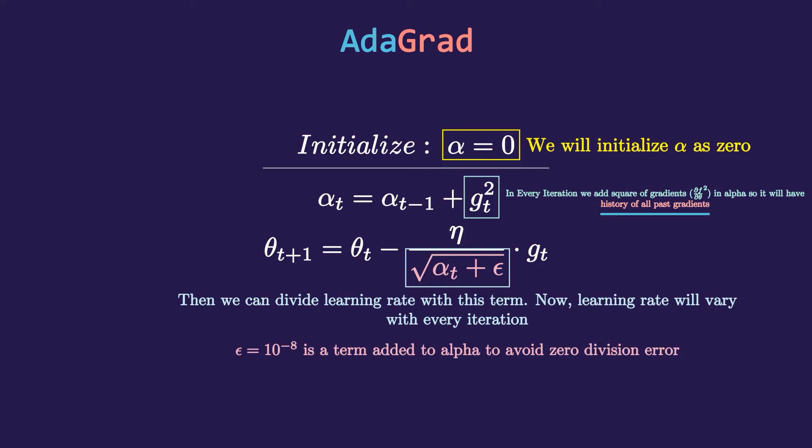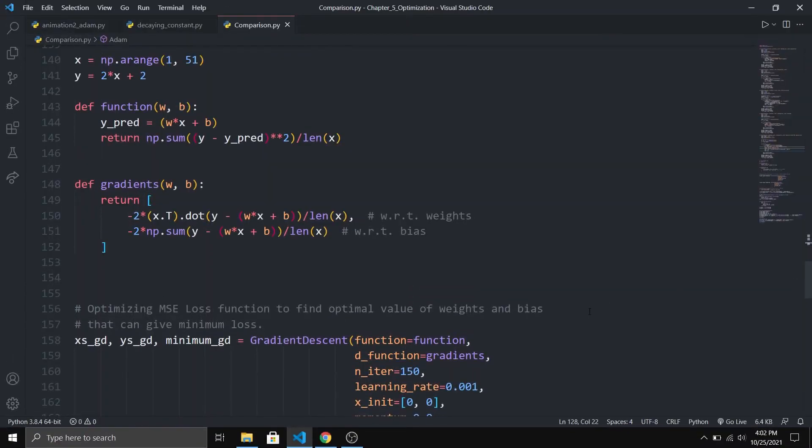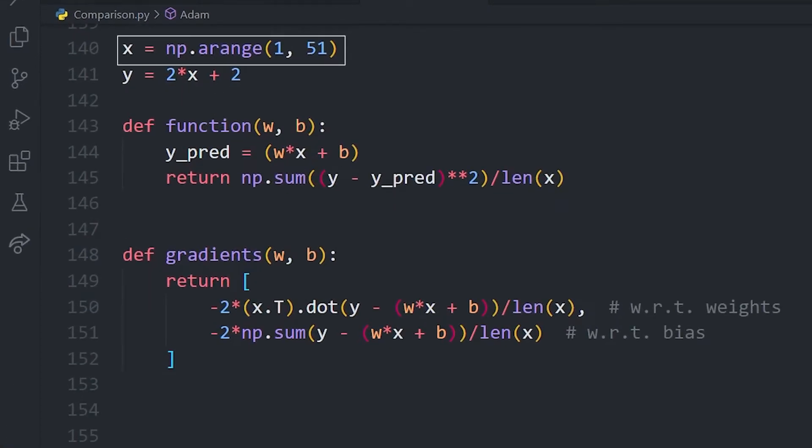But what change has this made? Can it do better than normal gradient descent? Short answer is yes. The long answer is: I have created linear data in which the input array contains numbers from 1 to 51 and the output array Y_true is a transformation of X. You might have guessed that both weights and biases are two. Then I have created this function which is taking weights and biases as input, also known as learnable parameters, because during the training process we will be finding optimal values of them which can give minimum error rate.